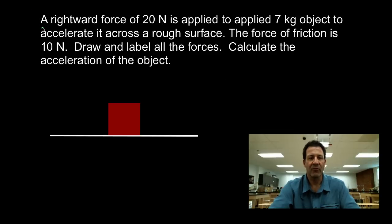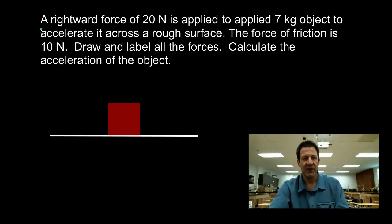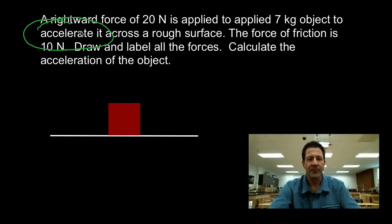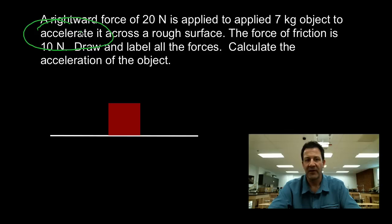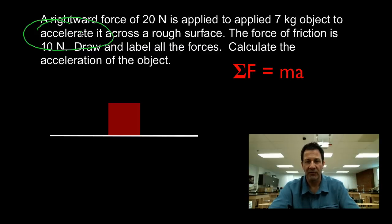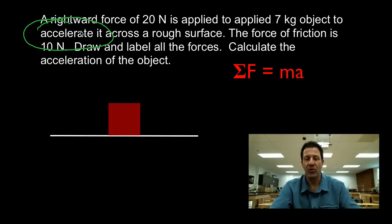We want to make sure we remember that it is accelerating, and that means when we draw the free body diagram, we have to have unbalanced forces. We know that we're going to use Newton's second law, which says that the sum of the forces is equal to the mass times the acceleration. Before we sum up the forces and calculate the acceleration, we are going to draw all the forces, label them, and determine and calculate their magnitudes.